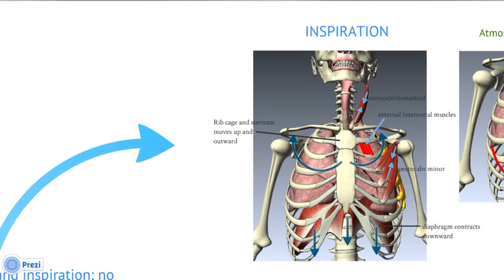There are also muscles involved in forced inspiration, such as the sternocleidomastoid, the pectoralis minor, and the serratus anterior. When these muscles contract, they increase both the vertical and front-to-back volume of the thoracic cavity. Because the lungs are attached to the thoracic cavity via the moist membranes, as the thoracic cavity expands, the lungs expand as well.